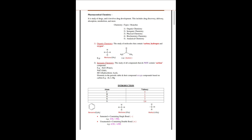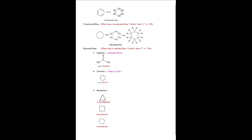A saturated compound contains a single bond — that is called saturated. An unsaturated compound contains a double bond. In an unsaturated ring, the carbon atom is CH, and in a saturated ring the carbon atom is CH2. Saturated compounds are divided into aliphatic and aromatic. Aliphatic is a straight chain, and aromatic is a ring or cyclic structure.